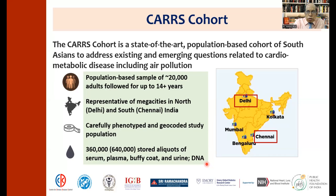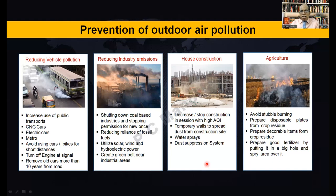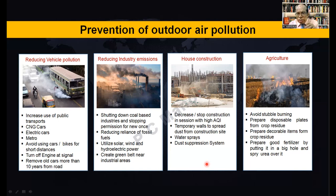The CARS cohort is ongoing, which is addressing various cardiometabolic risk factors including air pollution. How do we prevent air pollution? All of us are aware of the measures, as shown in this slide, but it only requires execution: reducing vehicular pollution, reducing industry emissions, household construction pollution, and parali burning which is rampant in the northern areas. The parali can be utilized to form fertilizer or decorative items. There are other measures also.